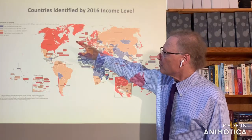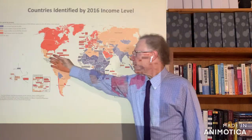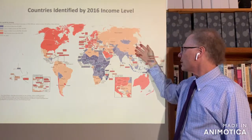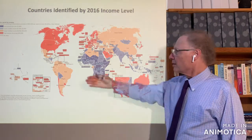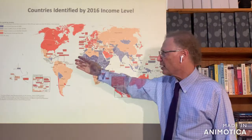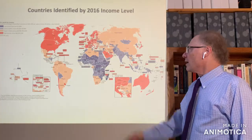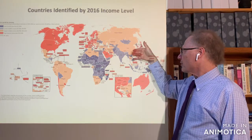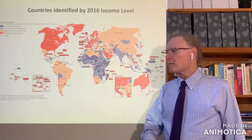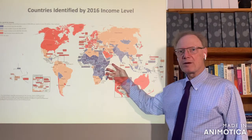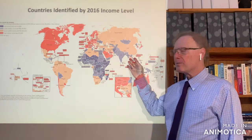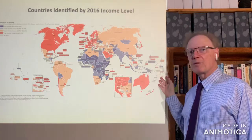The upper-middle income economies are predominantly found in Latin America and in Northern and Eastern Asia, with some exceptions — there are some lower-middle income countries in Latin America, and Haiti is a low-income country. Russia, China, and Thailand are examples of countries in the upper-middle income range. In the lower-middle income range, these are predominantly countries in Sub-Saharan Africa — though many others there are low-income — as well as South Asia and Southeast Asia.